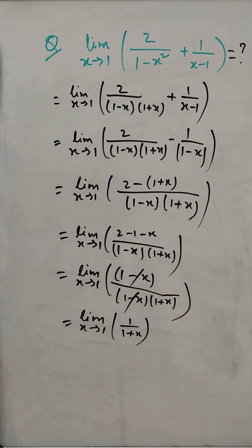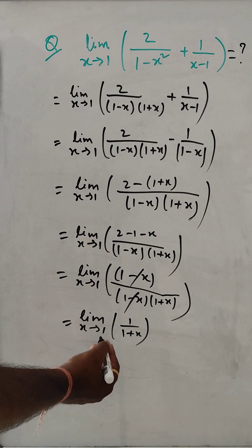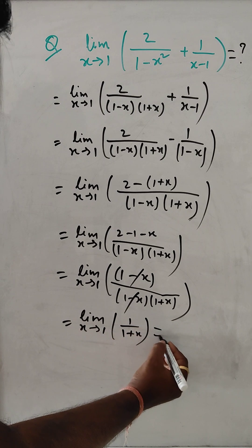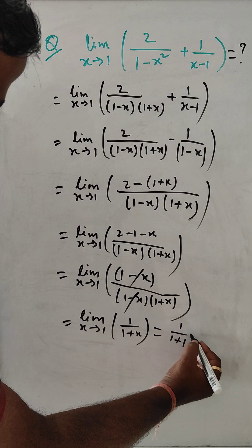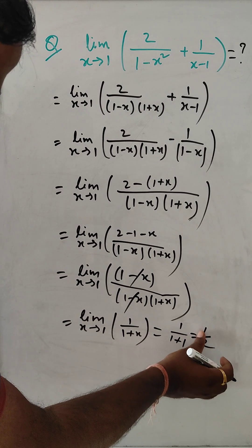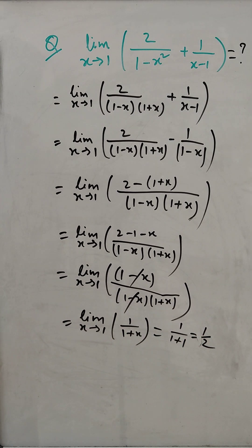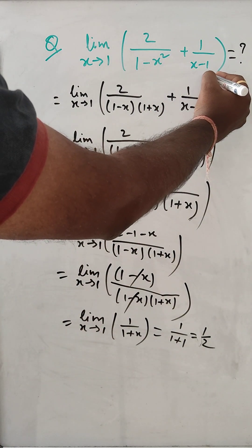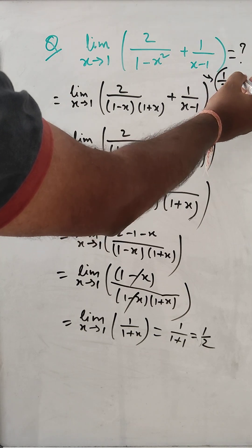Now we can directly substitute x equals 1. So it is 1 over (1 plus 1), which equals 1 over 2. This is the value — the solution of this problem is 1 by 2.